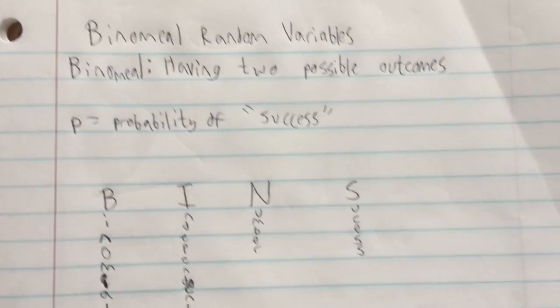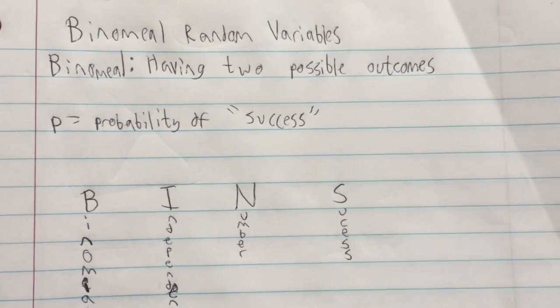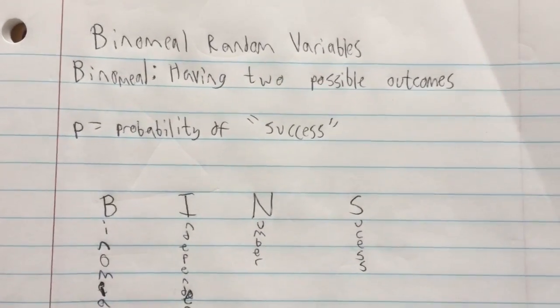Hello, today I'm going to teach you about binomial random variables. Binomial means that there are two possible outcomes. For instance, imagine flipping a coin. There's the outcome of heads and there's the outcome of tails.